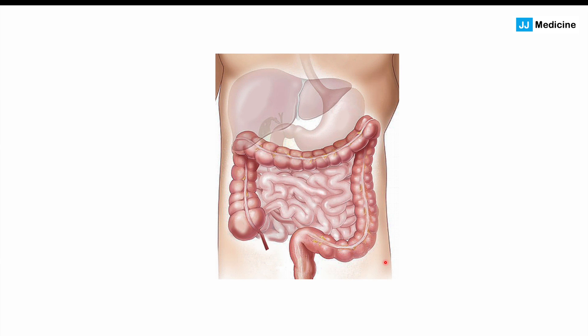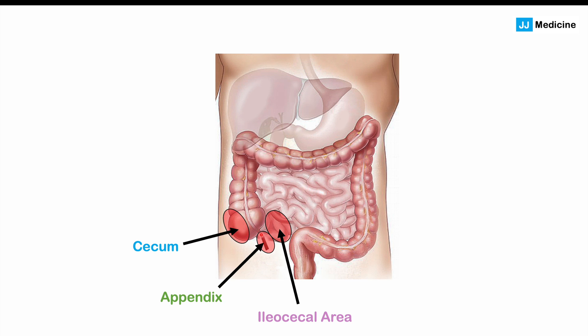Pinworms enter into the gastrointestinal system and reside in particular areas. These include the end of the small intestine where it meets the large intestine — the ileocecal area. They can also reside in the appendix, the cecum, and the ascending colon. These are the typical areas where pinworms reside.